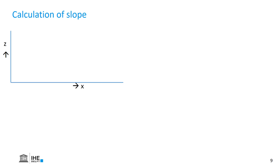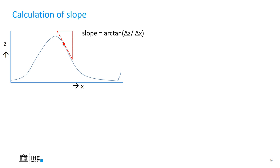In this graph, we see on the x-axis the distance and on the y-axis the elevation. The graph shows how the elevation changes with the distance. If we want to know the slope at a given point, we know from mathematics that we have to draw the tangent, and then the slope can be calculated as delta z over delta x, and if we take the arc tangent then we have it in degrees.